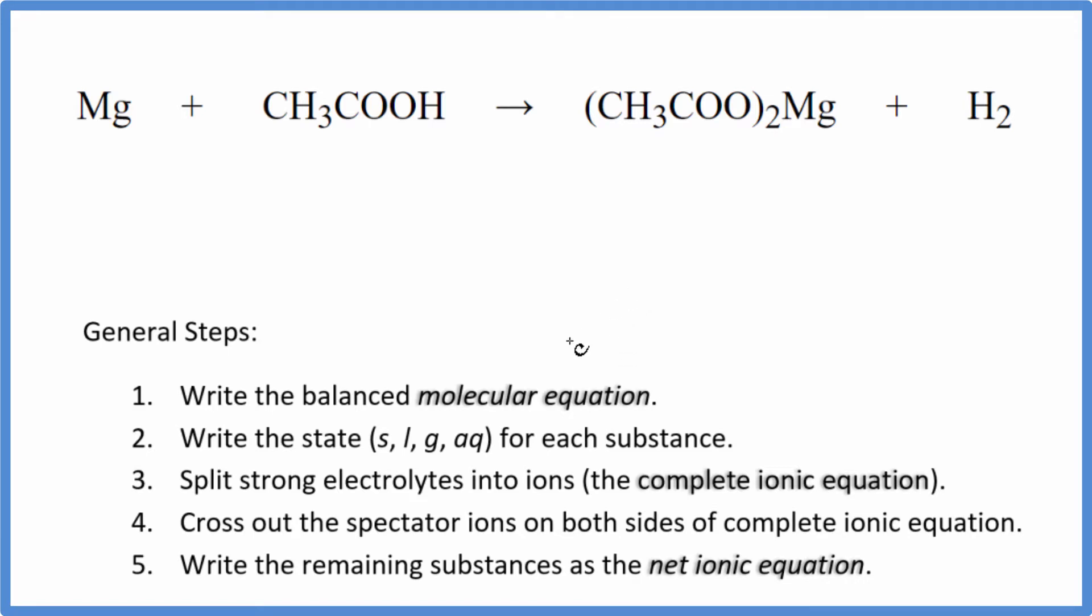So the first thing we need to do is balance the molecular equation. To do that, I can see that I have two of these acetate ions here, so I know I'm going to need to double this. If I double this, that will balance my acetate ions. Then I have these two extra hydrogens here, so that's good. I have two here, one magnesium, one magnesium. This is the balanced molecular equation.